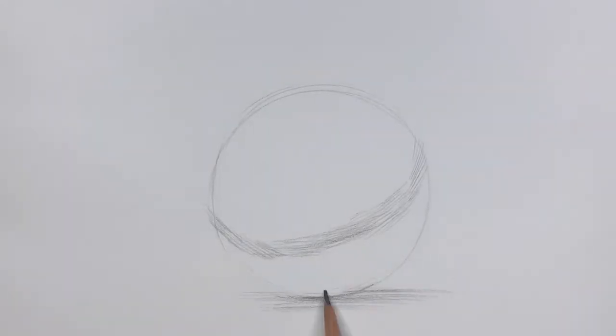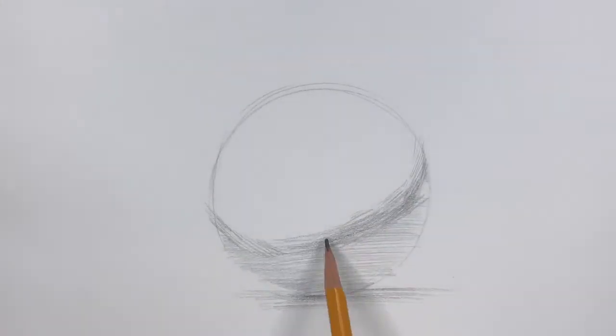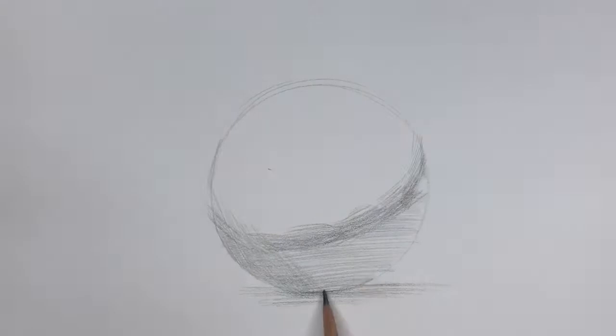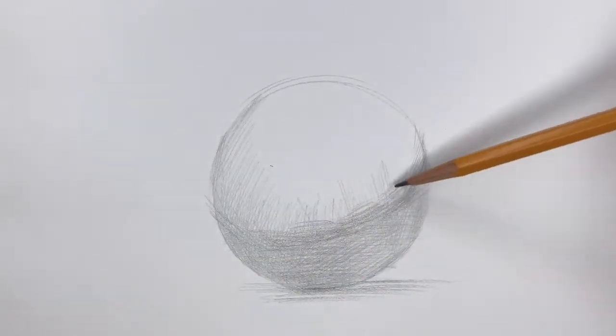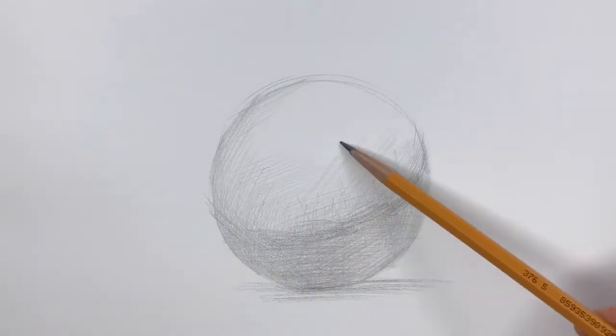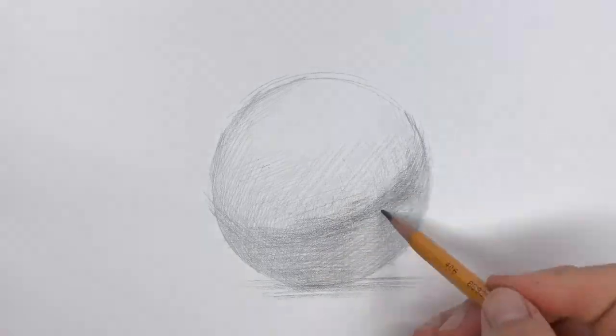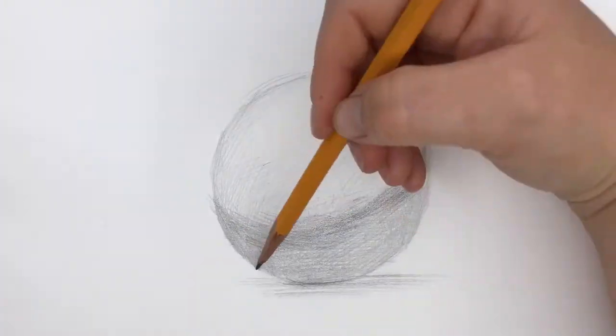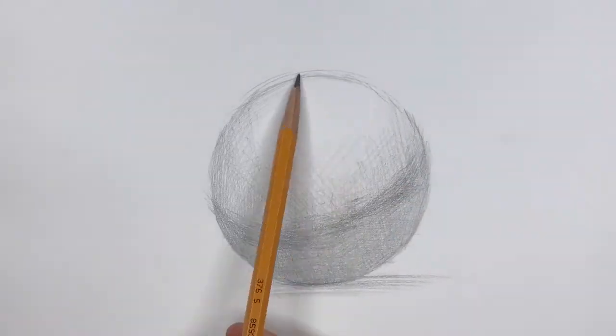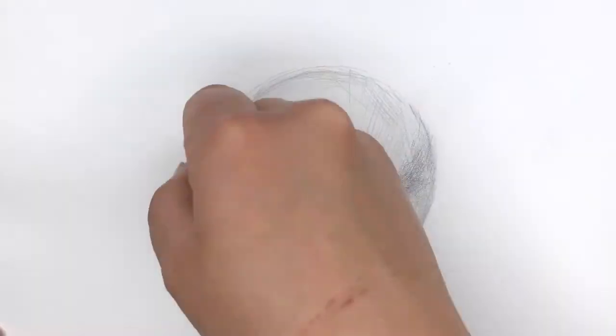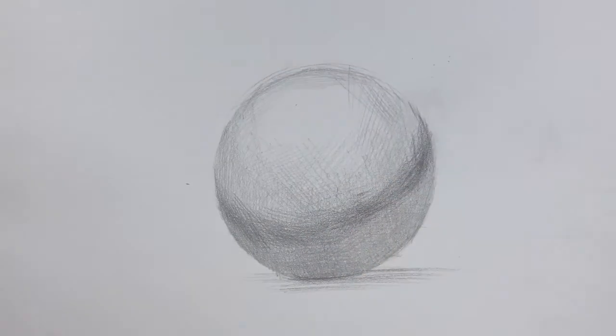So here I'm showing you how to draw a simple sphere using hatching technique. I'm both using the linear hatching, the cross hatching, and the contour hatching. I highly recommend that when you start drawing, you practice drawing from life. Choose very simple objects such as the sphere or a box or a cylinder.